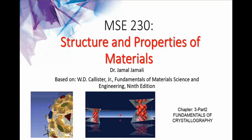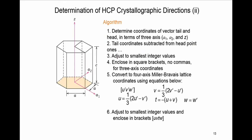Hello, this is the second part of Chapter 3, Fundamentals of Crystallography. After finding a vector in a hexagonal crystal with a given crystallographic direction, now we do the reverse: we are given a vector in a hexagonal crystallographic structure and asked to find its crystallographic direction.